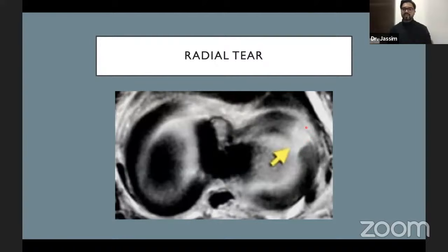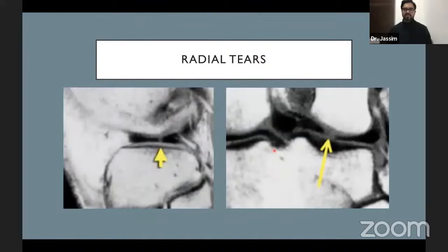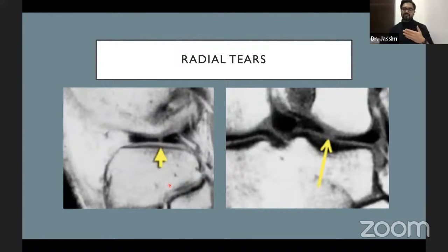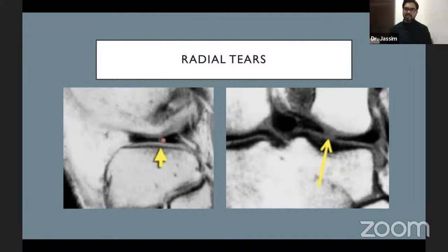A radial tear seen on axial imaging appears as a through-and-through hyperintensity — involving central and peripheral zones. On sagittal images, a radial tear may appear as a subtle absence or discontinuity when scrolling medial to lateral. Always double check on other planes including coronal and axial. A radial tear of the junction of the anterior horn and body of the lateral meniscus involving both central and peripheral zones is a more useful description than just calling it a grade injury.